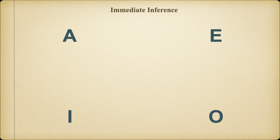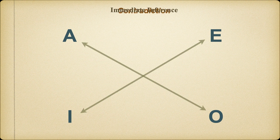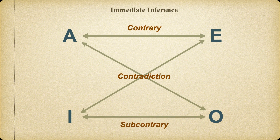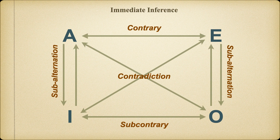We also learned how the organization of the categorical propositions on the square created four logical relationships: contradiction, where propositions have opposite truth values; contrariety, the relationship between the universal affirmative and universal negative, where they both cannot be true but they can both be false; subcontrariety, where they cannot both be false but they can both be true; and subalternation, where the truth of the universal implies the truth of the particular, and the falsity of the particular implies the falsity of the universal.